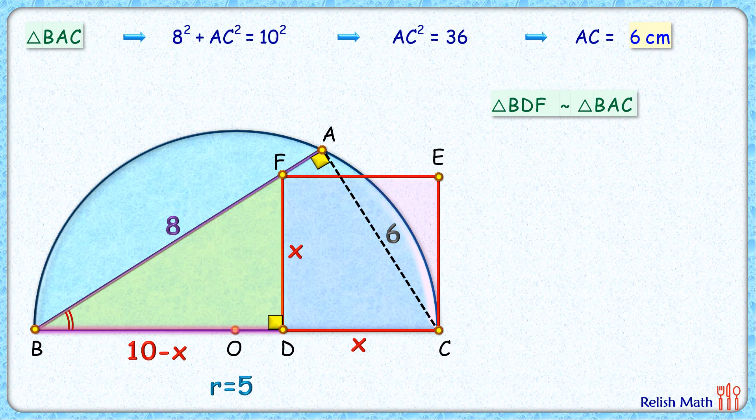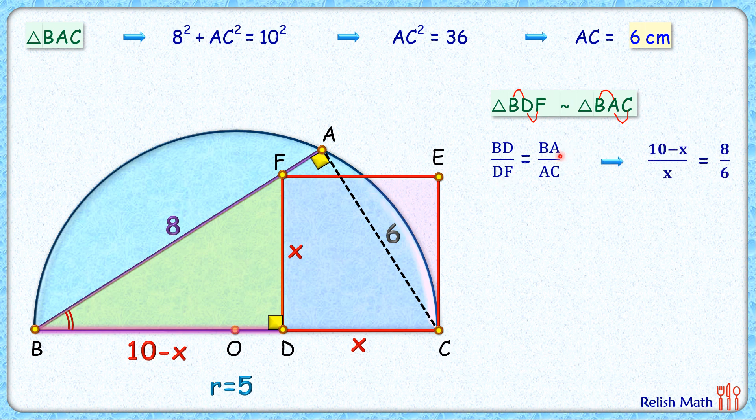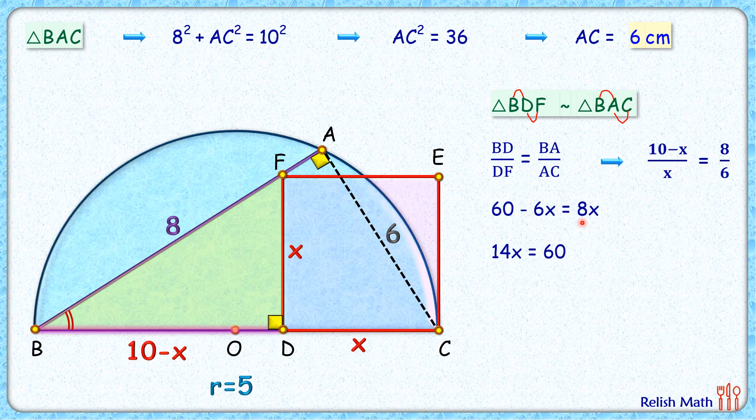As the triangles are similar, the ratio of corresponding sides will be equal: BD upon DF equals BA upon AC. Putting the values, BD is 10 minus x, DF is x, BA is 8, and AC is 6. Simplifying by cross multiplication and solving, we get 14x equals 60, so x is 60 by 14 or 30 by 7.